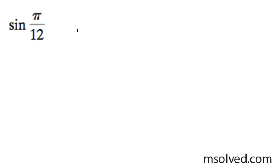Let's find the exact value of this trigonometric function. To find the exact value, we don't know what sine of π over 12 is, and we need to use identities to find this.